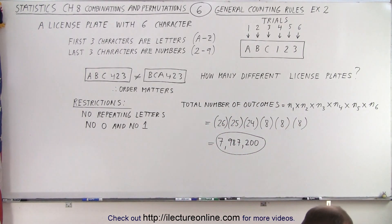Let's see if it's correct. 7,987,200. That's correct. Alright. Two out of two.